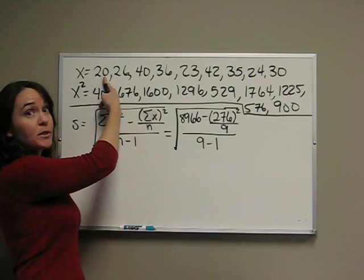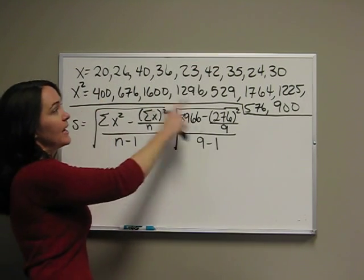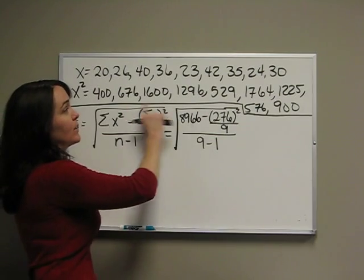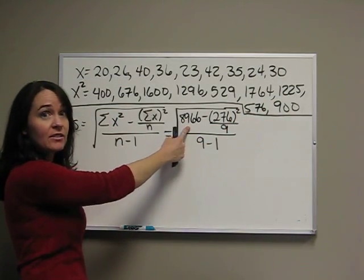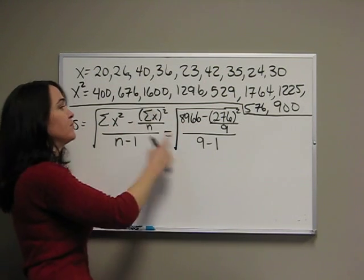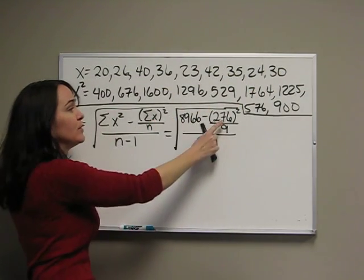So, for example, 20 squared is 400. So, I went ahead and squared all of our numbers. Now, when we add up the second row of numbers, you should get 8,966. That's the summation of x squared. The summation of x, when you add up the first row, you get 276.